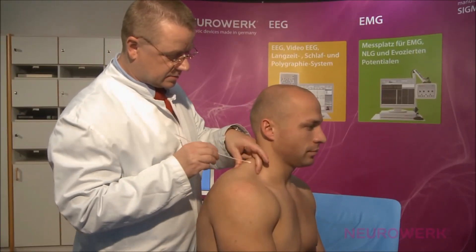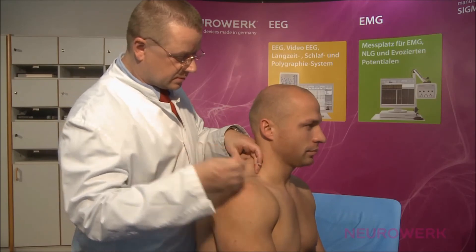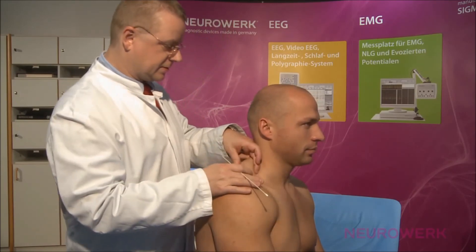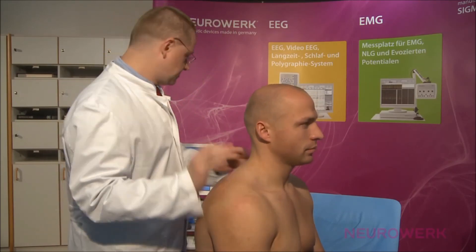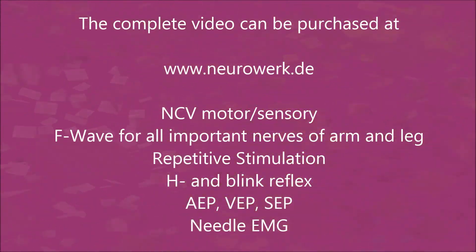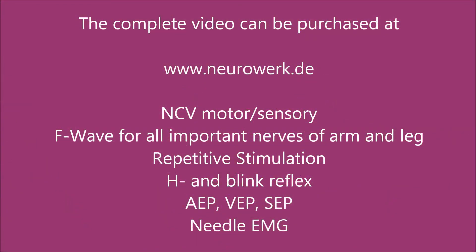The active electrode is placed directly on the trapezius muscle, which can be felt out when the patient constricts the muscle by pulling his shoulders up. That is the movement in the trapezius muscle, where you could see an effect.